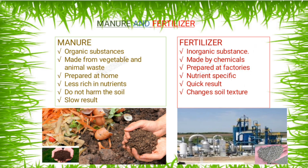Now in this slide we will be studying about the difference between manure and fertilizer. Manure is an organic substance whereas fertilizer is an inorganic substance. Manure is prepared from vegetable and animal waste whereas fertilizers are made from chemicals. Manure can be prepared at home whereas fertilizers are prepared at factories. Manure is less rich in nutrients whereas fertilizer is nutrient-specific and very rich in nutrients like nitrogen, potassium, and phosphorus.